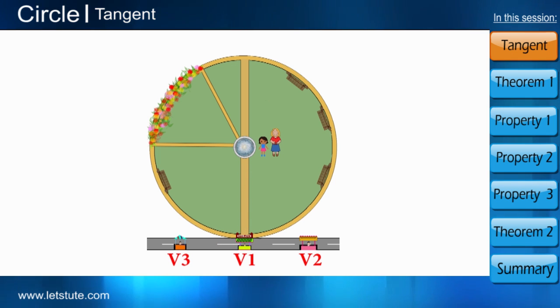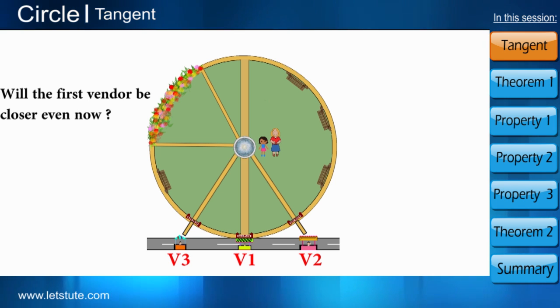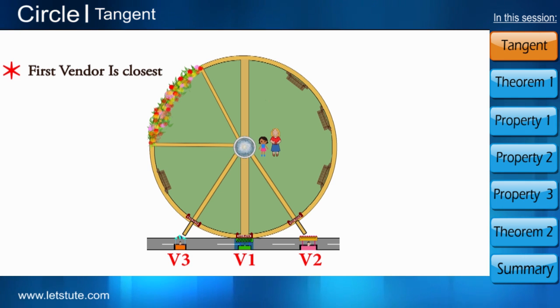Let's suppose if there were other gates, will then also the first vendor be closer? Now, let's study this concept geometrically and prove that the first vendor is closest and the distance is perpendicular to the road.